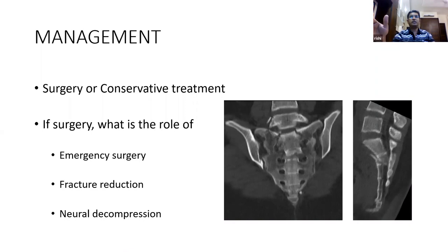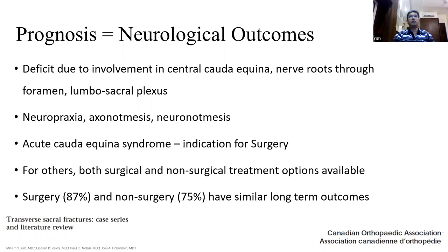Coming to management: does this patient require surgical fixation or can they be treated conservatively? If surgery is planned, is there a role for emergency surgery given neurological deficit? Should we reduce the fracture, and is there a role for decompressing injured nerves? The prognosis depends mainly on neurological outcome. In patients with high transverse fractures, there are two concerns: spinopelvic bony instability and neurological injury to nerve roots. Neurological deficit can occur due to three factors: involvement of the central cauda equina, damage to nerve roots exiting through sacral foramina, and injury to the lumbosacral plexus.